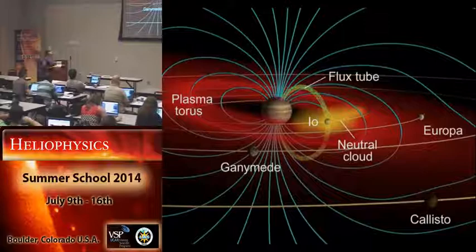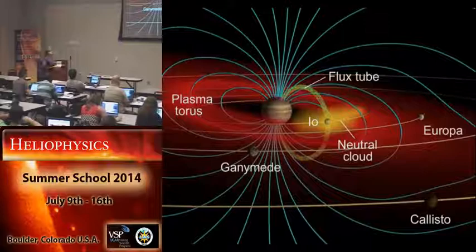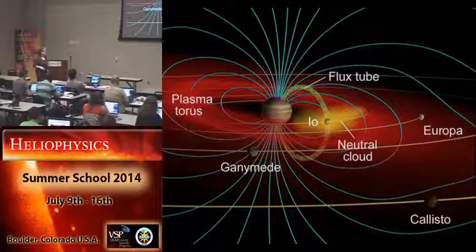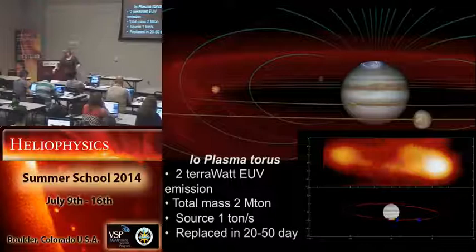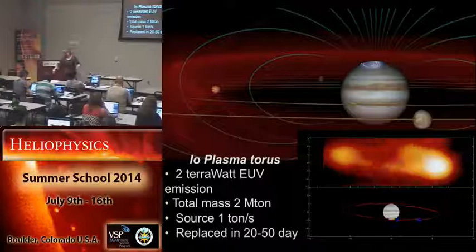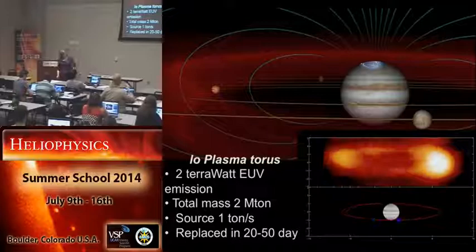At Jupiter that's very much not the case. We have these moons — Io, Europa, Ganymede, and Callisto — and particularly pesky Io, that volcanic moon that is spewing out sulfur dioxide and volcanic gases, is a big producer of plasma. Indeed, we have about a ton per second being dumped into the magnetosphere. It becomes ionized and caught up in the magnetic field.